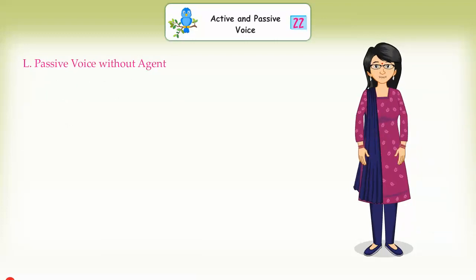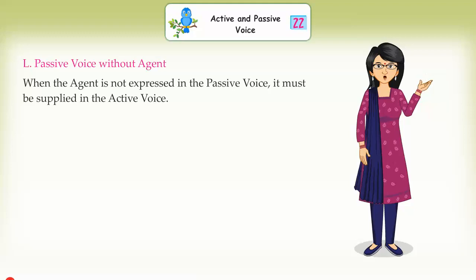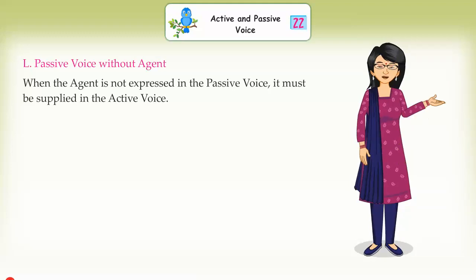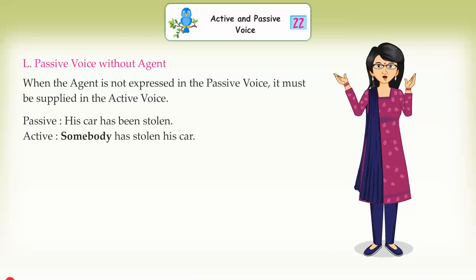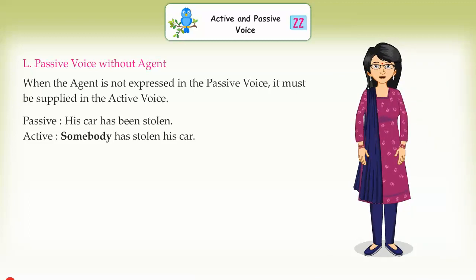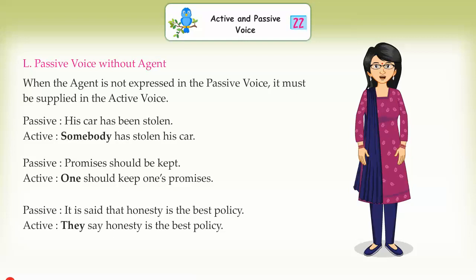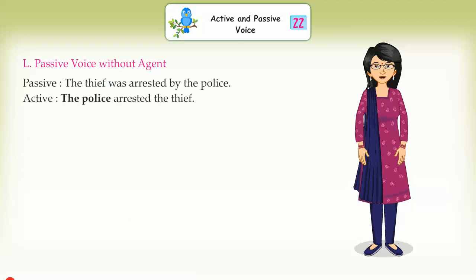Passive voice without agent. When the agent is not expressed in the passive voice, it must be supplied in the active voice. Passive: 'His car has been stolen.' Active: 'Somebody has stolen his car.' Passive: 'Promises should be kept.' Active: 'One should keep one's promises.' Passive: 'It is said that honesty is the best policy.' Active: 'They say honesty is the best policy.' Passive: 'The thief was arrested by the police.' Active: 'The police arrested the thief.'